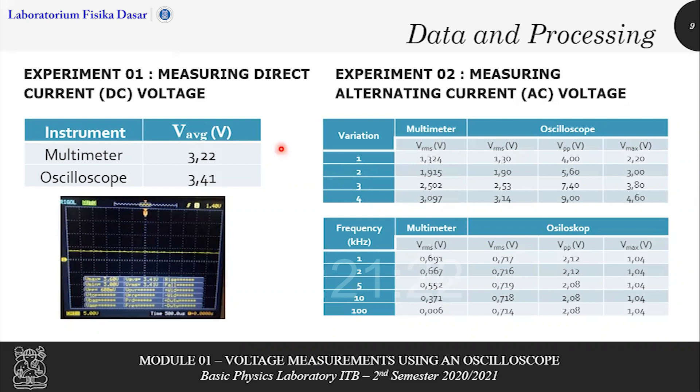Now let's continue to data processing. There are four experiments in this module. Experiment one, measuring direct current or DC voltage. We determine the average voltage for two instruments for this experiment. For this experiment and the second experiment, you will be given the picture and you need to fill the table by yourself. So the data in oscilloscope is pretty clear from the picture. You can see the average voltage from the picture.